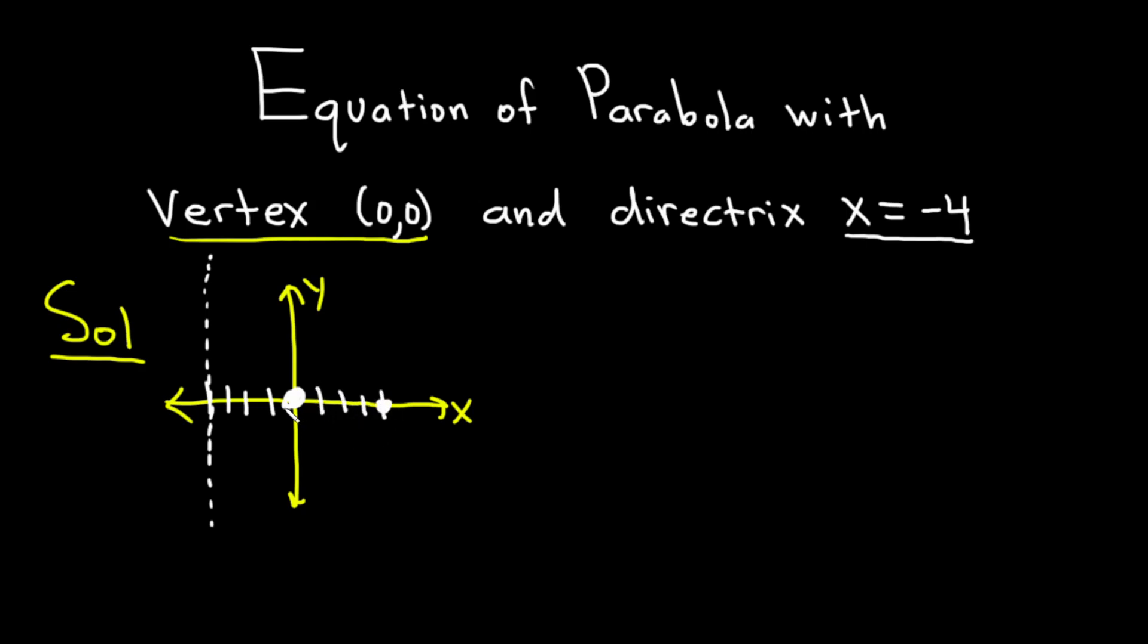And the reason we know that is that the distance between the directrix and the vertex is the same as the distance between the vertex and the focus. So it's equidistant. And it opens towards the focus. So it has to look like this. So this distance here has to be the same as this distance here. Distance between directrix and vertex is equal to distance between vertex and focus.